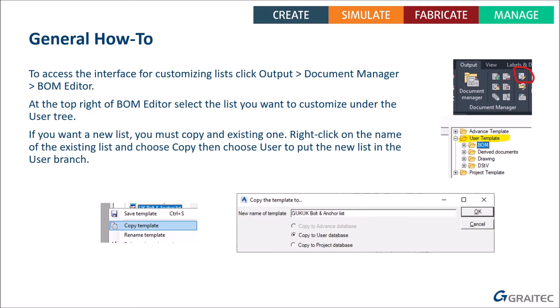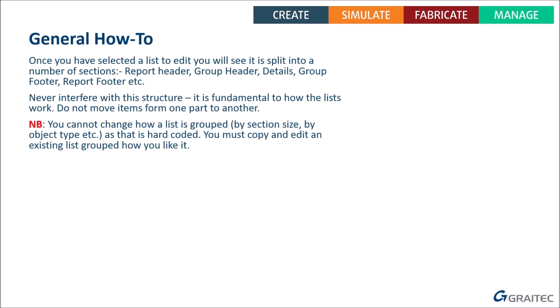If you want to make a new list, you can't create one from scratch — you have to copy an existing one. Find the one closest to what you want, select it, right-click on the name, and choose Copy Template. You'll then see a box where you can set the new name and choose to add it to the user database or project-specific database. Since there's no reason to make new lists for every project, add it to the user database.